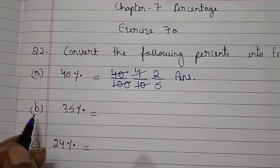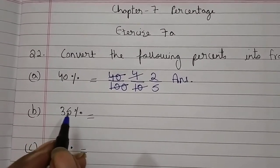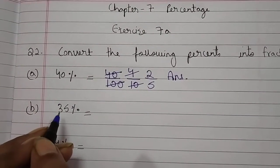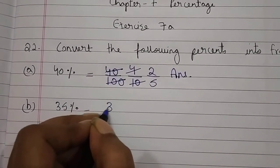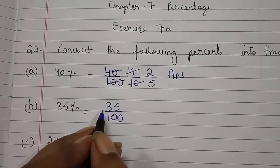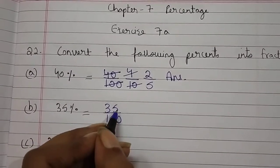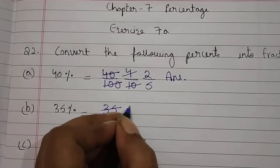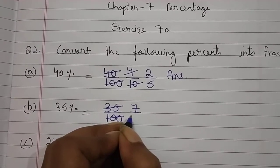Now come to B part. Question is 35%. Now students, हमें 35% को fraction में convert करना है. तो इसके लिए हम लोग 35% को divide करेंगे 100 से. So students, 35 divided by 100. हम लोग 35 and 100 को divide करेंगे 5 से. क्योंकि 5 की टेबल में 35 भी आता है और 5 की टेबल में 100 भी आता है. 5 into 7 is equal to 35. 5 into 20 is equal to 100.